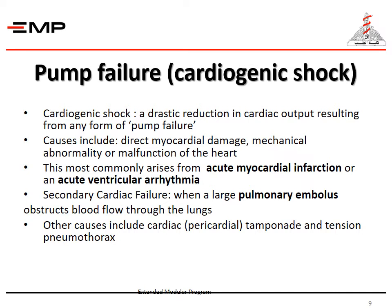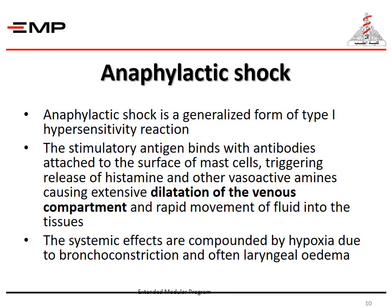Cardiogenic shock is a drastic reduction in cardiac output resulting from any form of pump failure. Causes include direct myocardial damage, mechanical abnormality, or malfunction of the heart. This most commonly arises from acute myocardial infarction or acute ventricular arrhythmia. Secondary cardiac failure occurs when a large pulmonary embolus obstructs blood flow through the lungs. Other causes include cardiac tamponade and tension pneumothorax.